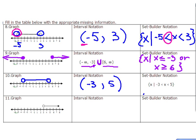On the graph it shows number 3 as an end point with clear circle. We know that number 3 is not going to be part of that interval. So we will use parentheses. Positive 3 is an end point.